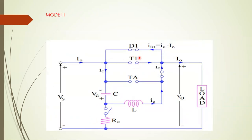In Mode 3, thyristor T1 is reverse-biased. The charging current now conducts through diode D1 and completes its path: Vc+ to L, L to D1, D1 to Vc−. The load current I0 now flows through the capacitor since the thyristor is off. The IC current continues flowing through this path. Once it reaches the positive half cycle again, the polarities change and the diode becomes reverse biased. The I0 flows through the path: capacitor to L, L to load.